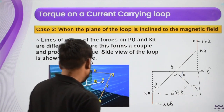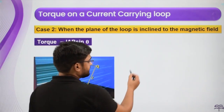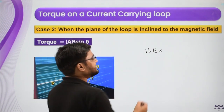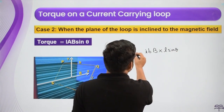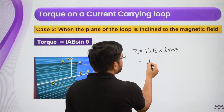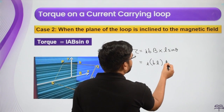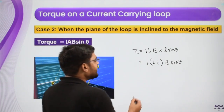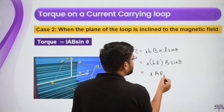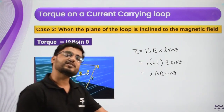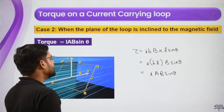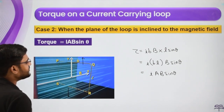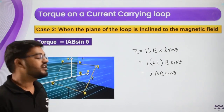The torque of a couple is one force times the perpendicular distance between the lines of action. So torque = IbB × L sin theta. In this expression, b times L is the area A. So torque = IAB sin theta. Due to these two forces, the loop will turn, confirming this is the torque on a single loop.